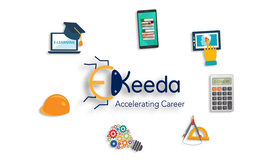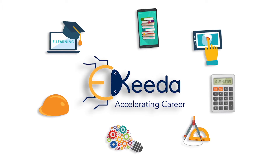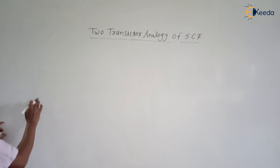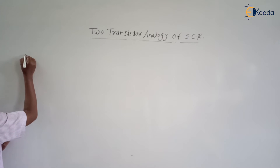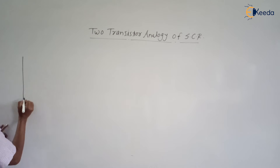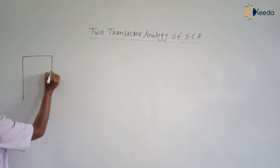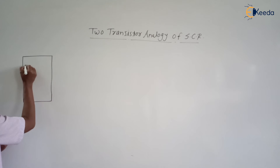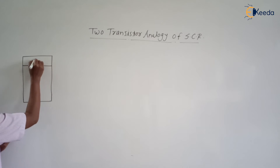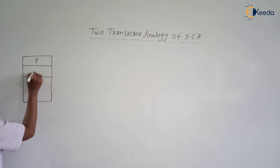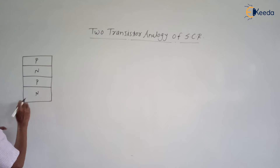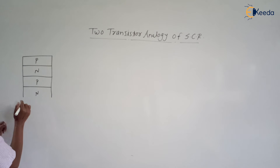As we know, SCR is a PNPN device. It consists of four layers: P, N, P and N. So it is a PNPN device.